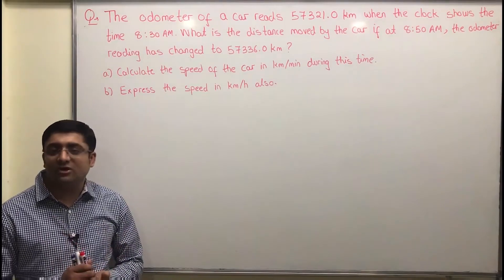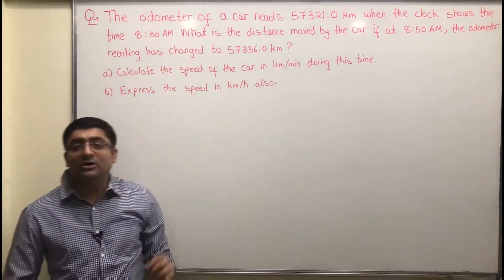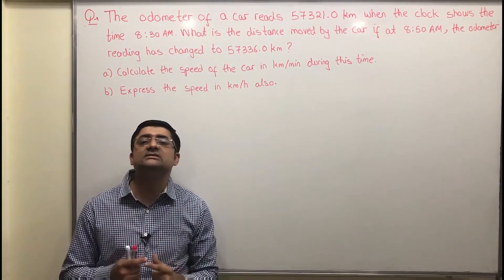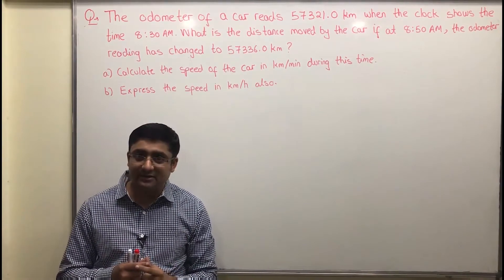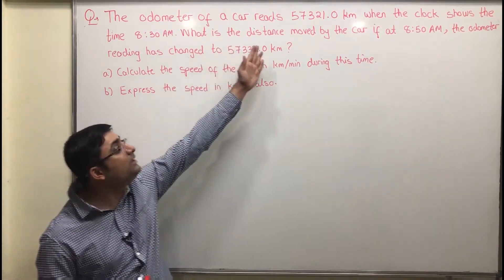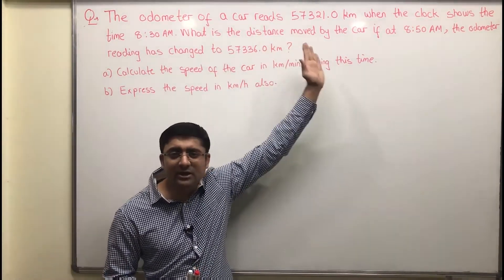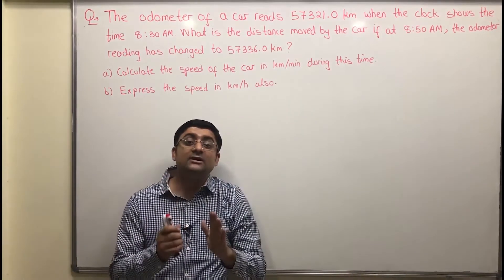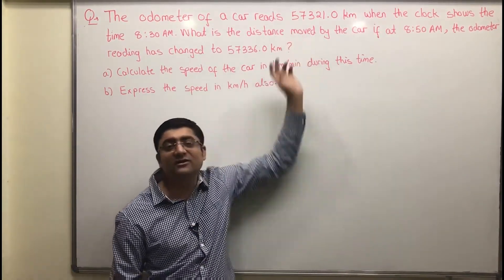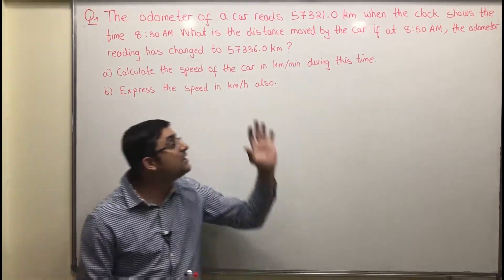What is the concept here? What is the odometer of a car? It basically shows us the distance covered by the car. So when we say the odometer reading is so much, that means from the time the car was made till now, the car has travelled a distance of that much.